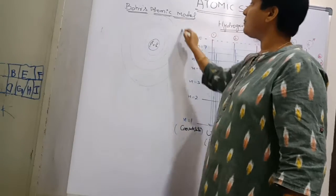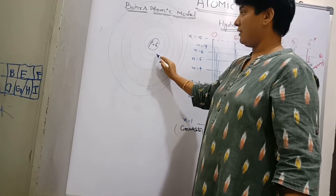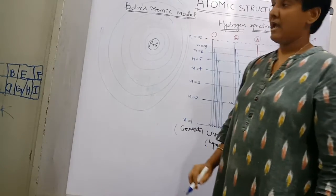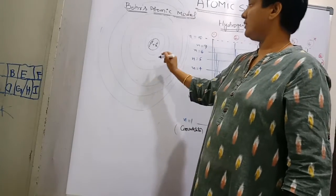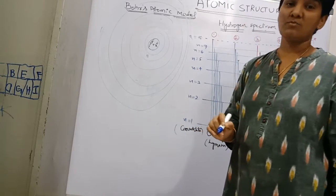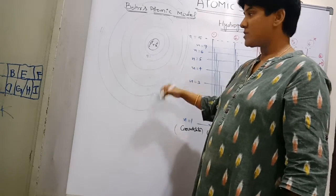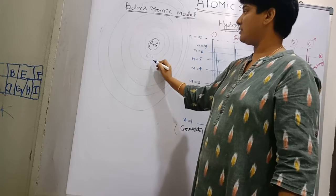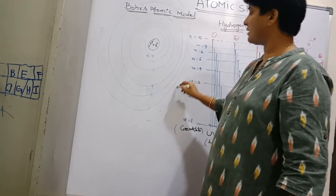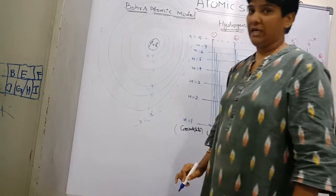Around the nucleus there are infinite number of orbits — don't think that only one orbit is present. There are infinite number of orbits, and each orbit is named by the principal quantum number given by small n. These are numbered from the nucleus outward, so the very closest one is n=1, then 2, 3, 4, 5, 6, and so on up to infinity. These are also designated by alphabets K, L, M, N, O, P, etc.